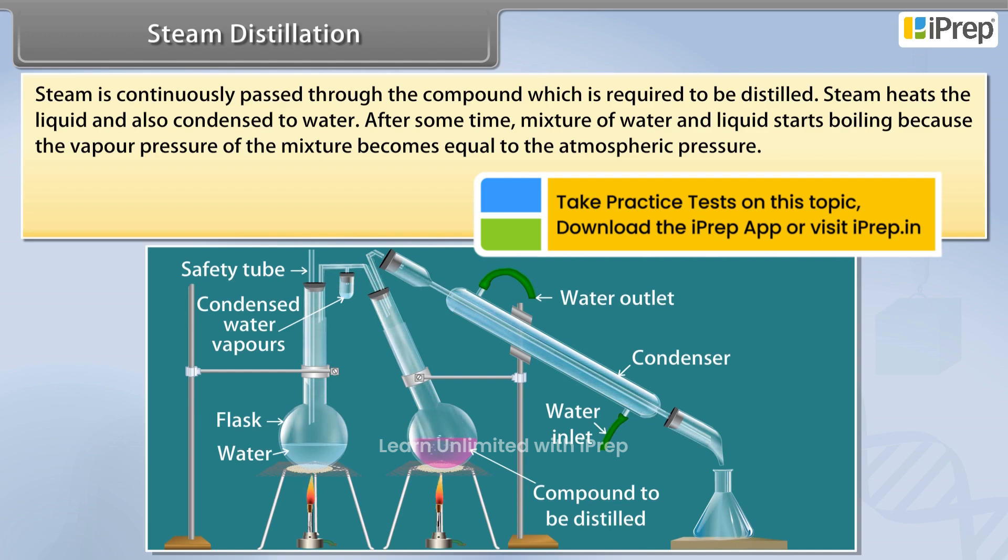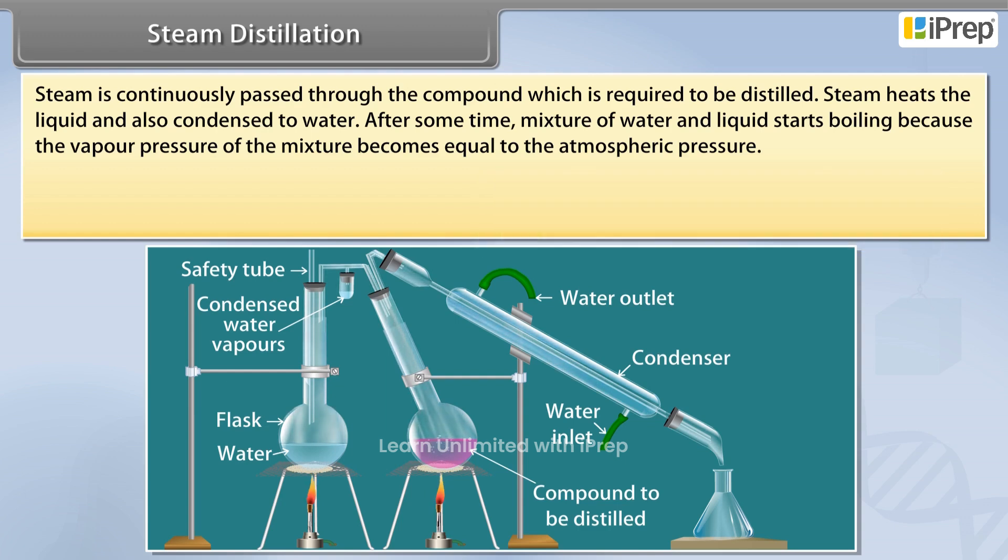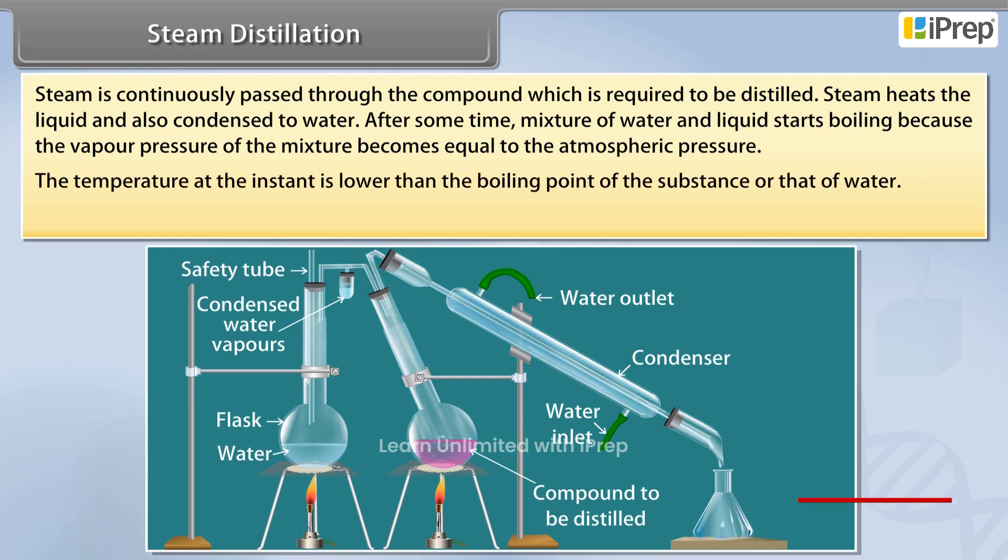After some time, the mixture of water and liquid starts boiling because the vapor pressure of the mixture becomes equal to the atmospheric pressure. The temperature at this instant is lower than the boiling point of the substance or that of water.